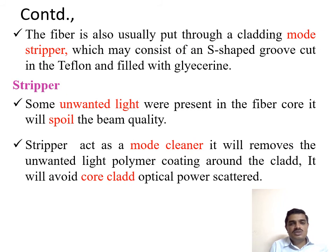The fiber is also usually put through a cladding mode stripper, which may consist of an S-shaped groove cut in Teflon and filled with glycerin. A stripper removes unwanted light that may be present in the fiber core, which spoils beam quality. The stripper acts as a mode cleaner, removing unwanted light and polymer coated around the cladding. It will avoid core-cladding optical power scattering.